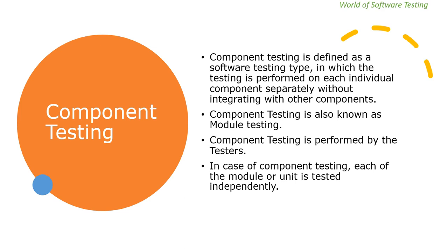In component testing, each module or unit is tested independently. An input is passed to the unit and the output generated by the unit is compared with the expected output. If the actual output matches the expected output, the test is passed. If it does not match, the test is failed.